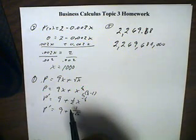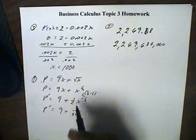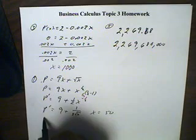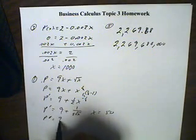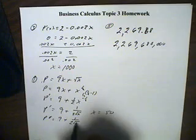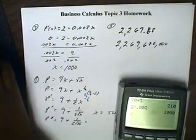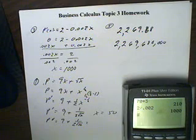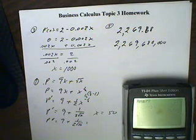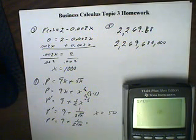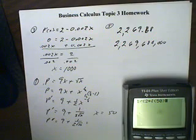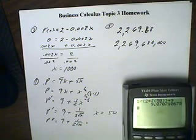Now we're looking for the value when we have 50 magazines, so x equals 50. We're going to evaluate 9 plus 1 over the quantity 2 times the square root of 50. So that's 1 divided by the quantity 2 times the square root of 50, close parenthesis, and then add 9 to that result. So it'll be $9.07.